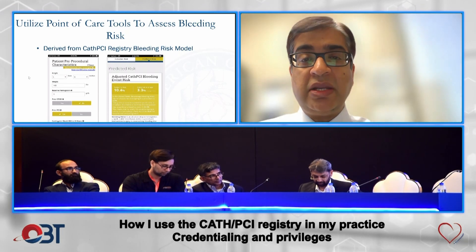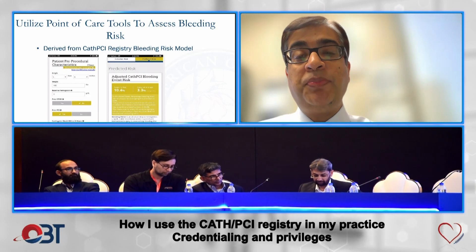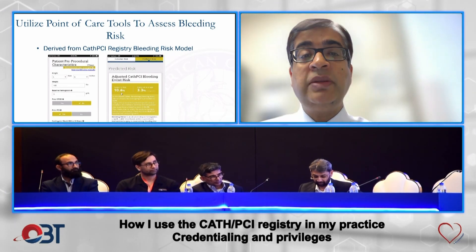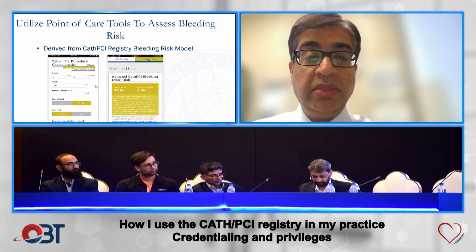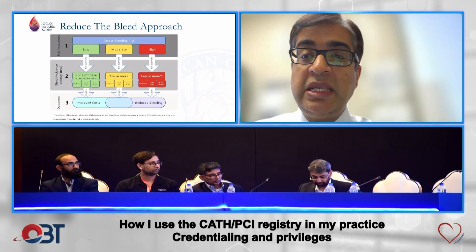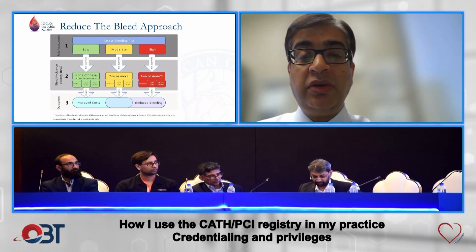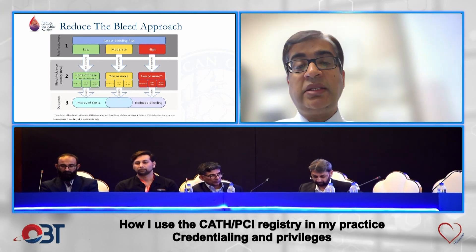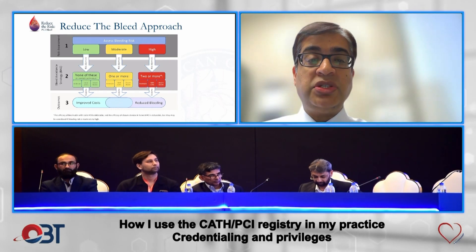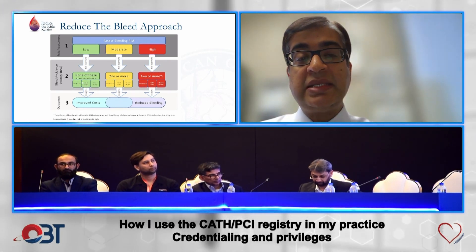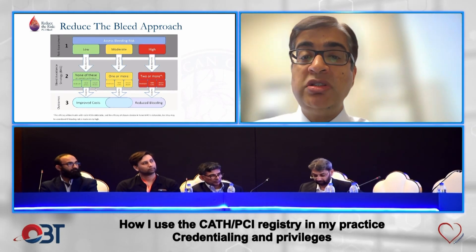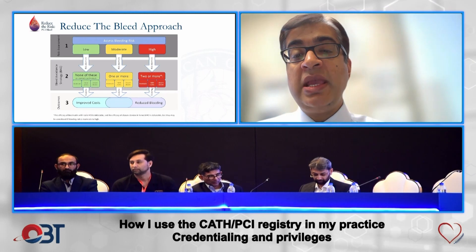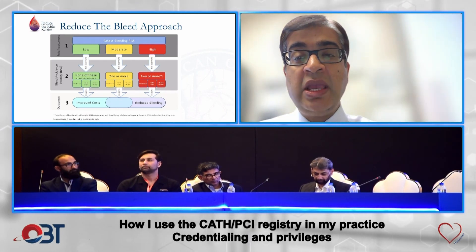We started using a point-of-care tool to assess bleeding risk, which is available online — the Cath PCI registry bleeding risk model. That tells you the pre-procedural bleeding risk of the patient. If the patient's risk is high, such as a 10% chance of bleeding, you can use certain strategies to reduce it, such as use of bivalirudin, radial access, and vascular closure devices. Randomized control trials have shown that bivalirudin use does reduce the risk of bleeding, particularly with femoral access. If the patient is at high risk, using at least two of these three strategies — bivalirudin, radial access, and closure devices — would help improve outcomes.